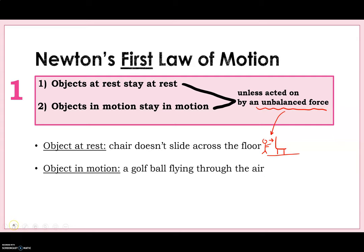Similarly, an object in motion. So a golf ball flying through the air. The golf ball is going to keep going through the air until an unbalanced force acts on it. So that could be that maybe it's a really bad shot and the golf ball hits a tree. Then the golf ball stops because there's something in the way. That's the unbalanced force. Or maybe it keeps on going and then eventually falls to the ground.